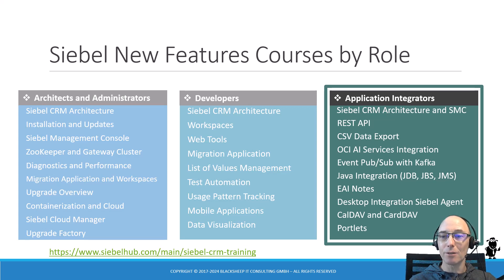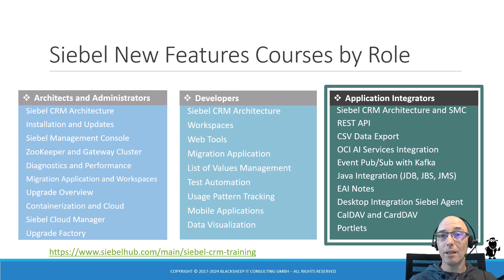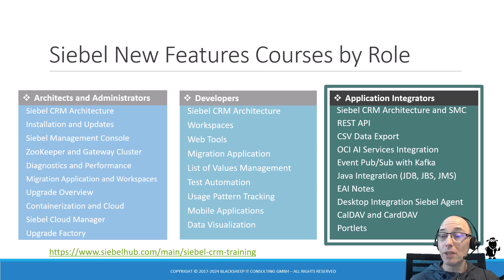The application integrators new features class includes information about the Siebel CRM architecture, the management console, and new features introduced in IP 16 and later such as the REST API, CSV data export, OCI AI services integration, and event publication and subscription with Apache Kafka.